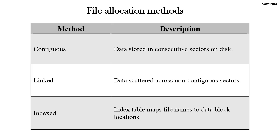File allocation methods determine how data is placed or managed, or how disk blocks are allocated for each file. Three main methods are contiguous, linked and indexed. In contiguous, data is stored in consecutive sectors on the disk. In linked, data is scattered across non-contiguous sectors. In indexed, an indexed table maps file names to data block locations. We will see each method with the help of diagrams.